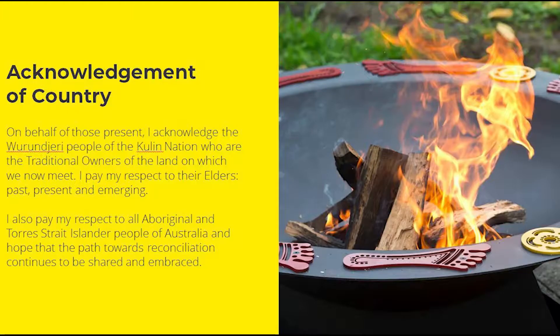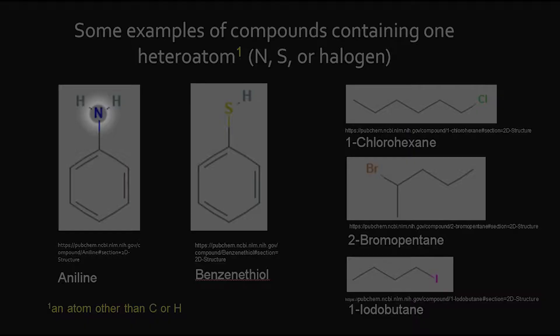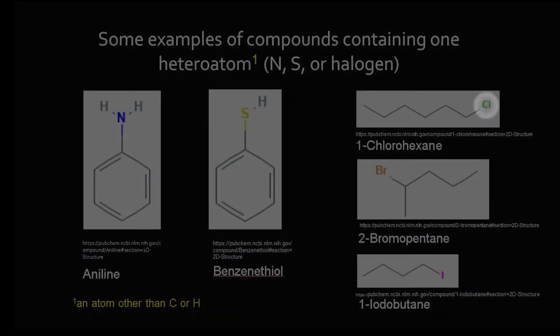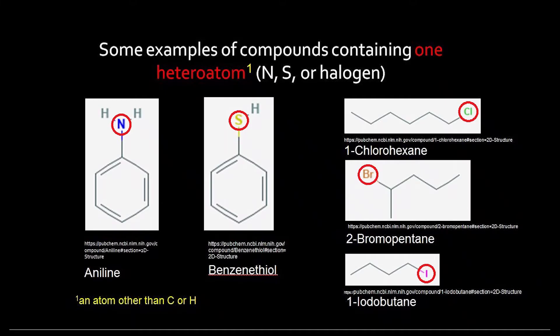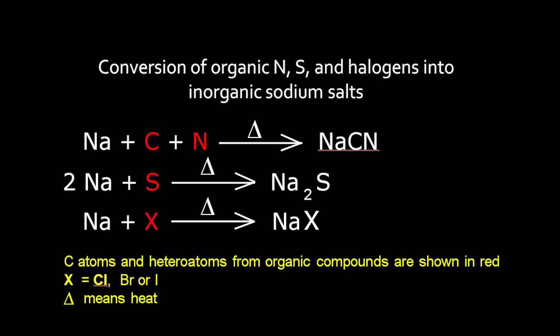Sodium fusion test. The sodium fusion test, or Lassaigne's test, is used for the detection of the presence of nitrogen, sulfur, and halogens in compounds with one or more than one type of heteroatoms. To identify these elements, we need to convert a covalent compound into inorganic salt by fusion with sodium.